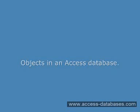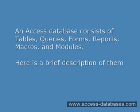Objects in an Access database. An Access database consists of tables, queries, forms, reports, macros and modules. Here's a brief description of them.